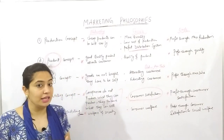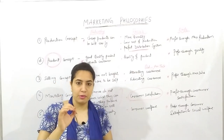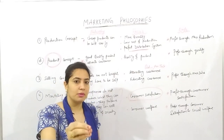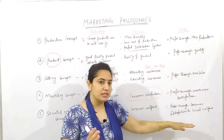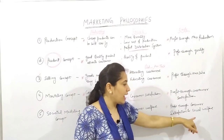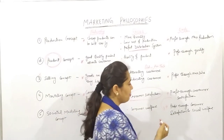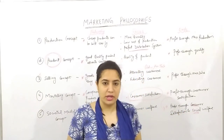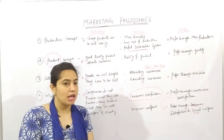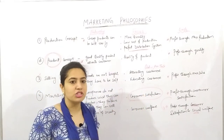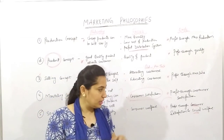So consumer welfare means giving good quality products, not polluting the environment, and not causing unemployment. They focused on not making any product that harms consumer health or environmental health. Their profit maximization was through customer satisfaction and social welfare. Here, along with the customer, society was also focused on. The difference between all these concepts is also given in your book, and once you understand these concepts easily, making comparisons will become very easy.